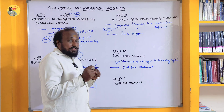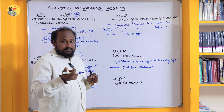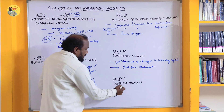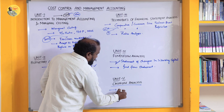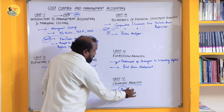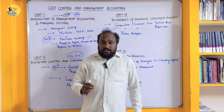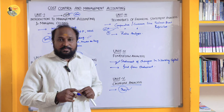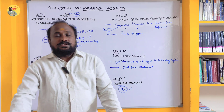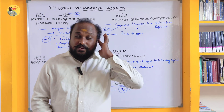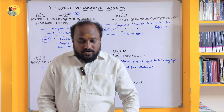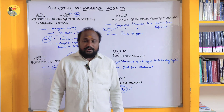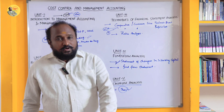Unit 5 is Cash Flow Analysis. He will definitely give one sum from Cash Flow Analysis. The key areas are Cash from Operations, Financing, and Investing activities. Be prepared for the Cash Flow Statement. He may ask a 4-mark question from Cash Flow Operations. In the last unit, one theory question that is very important is the difference between Cash Flow and Funds Flow statements.